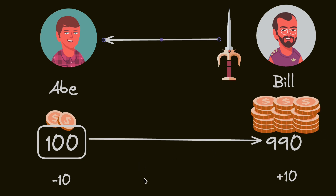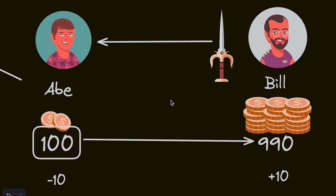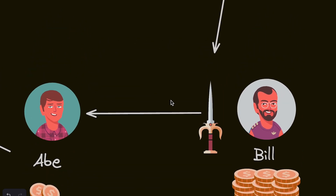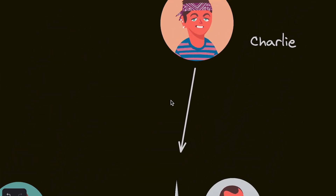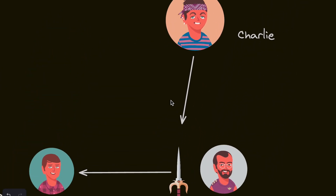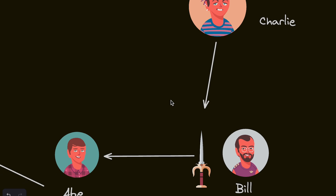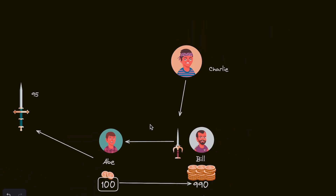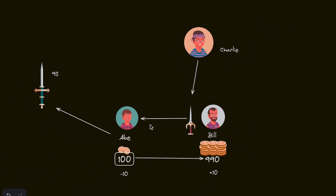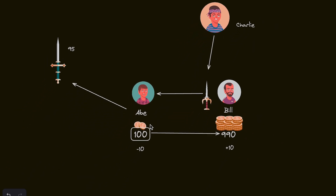But imagine there are millions of exchanges taking place simultaneously. Imagine Charlie has also initiated a purchase of Bill's legendary sword at exactly the same time. And imagine that Abe is also trying to buy the epic sword of strength, which costs 95 gold at the same time — so he doesn't have enough money to buy both.